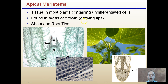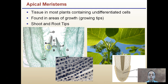These apical meristems are tissue in most plants containing undifferentiated cells found in areas of growth, such as the growing tips. Many people associate the shoot tips as an apical meristem, which is true, but we also can't forget about the root tips that occur below ground. In the lab, we looked at cells going through high rates of mitosis — those were root tip cells. The same thing is happening at the shoot tip, and both of these are considered apical meristems.